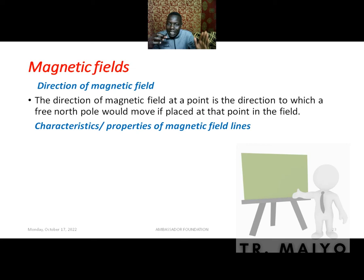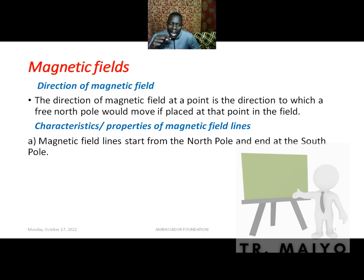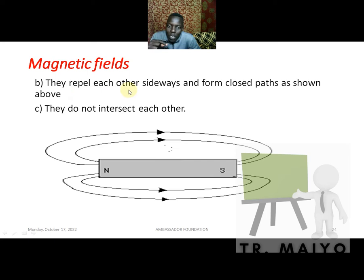Now, these magnetic field lines that make up the magnetic field pattern have certain characteristics or properties. Magnetic field lines start from the north pole and end at the south pole — as we saw using the bar magnet. They move from the north pole and end at the south pole of the same magnet, or at the south pole of a different magnet.